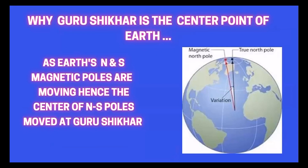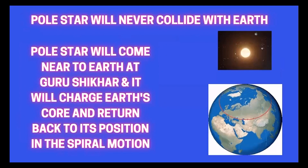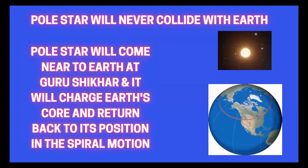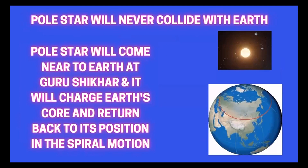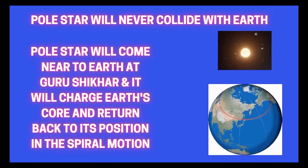People are calling it Nibiru or Planet X — basically this Polestar is itself the Nibiru or Planet X the world is searching for. This Polestar will come very near to Earth, but it will never collide with Earth. It will come near to Guru Shikha and charge Earth's core, then return to its original position in spiral motion.